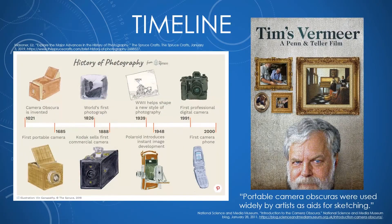In terms of a timeline, the camera obscura was invented around the year 1021. The first portable camera — probably about the size of a lunchbox — followed. The world's first photograph was taken in about 1826, and then shortly after that Kodak was commercially making and selling cameras. From there it picked up rapidly to advance to the place where we now have cameras in our cell phones today.